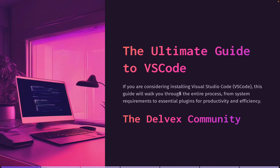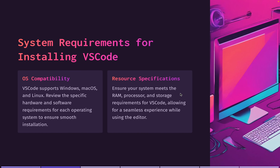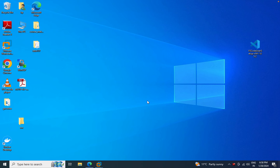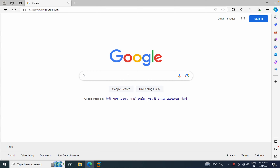This is VS Code, offered by Delvex company. Let's talk about the operating system compatibility for VS Code installation. VS Code is a very popular software for developers and you can install it on Windows, Linux, and Mac. I'll show you how to install it on Windows first, then on Mac. The requirements are minimal — very low RAM and CPU needed. I already have VS Code downloaded on my Windows machine.